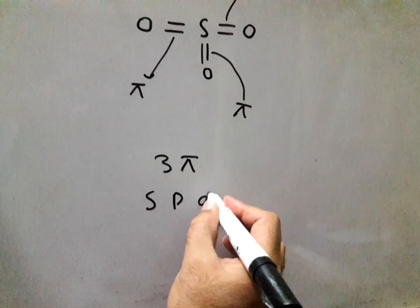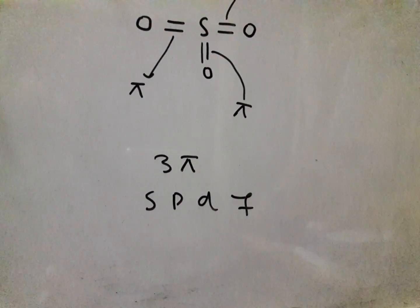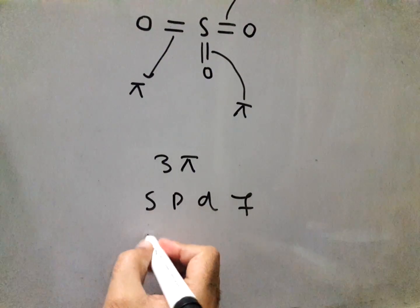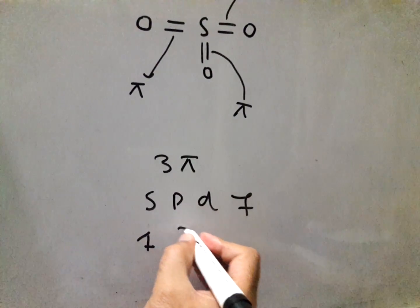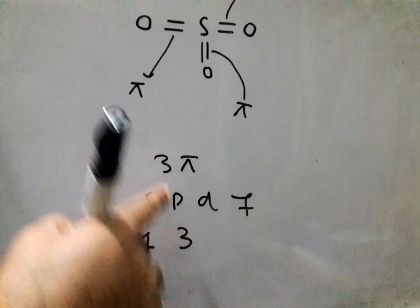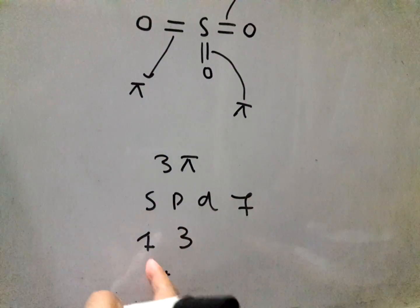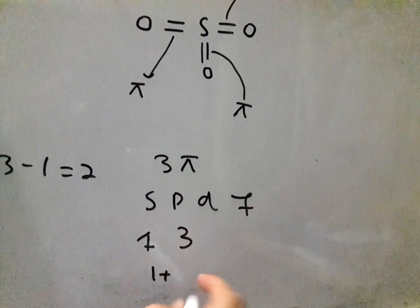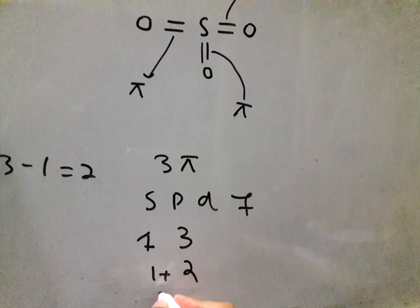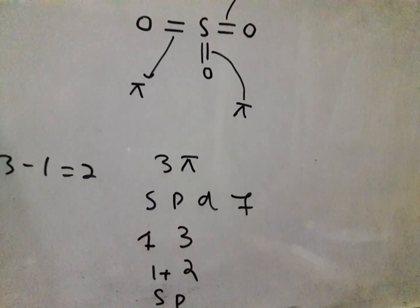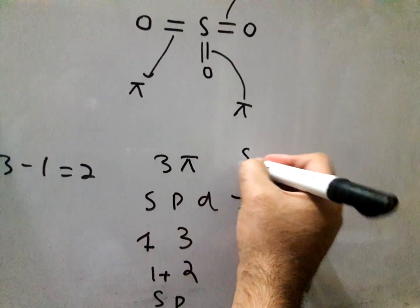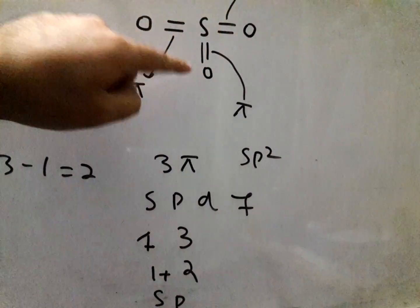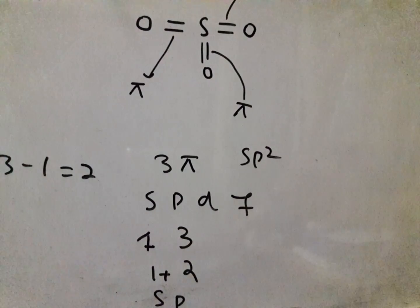When there are three pi bonds, you calculate the SPDF subshells. S has one orbital — write one. Three minus one is equal to two, and add two from the P subshell. So one from S and two from P gives you SP2. That is the first way — you can determine hybridization from the number of pi bonds.